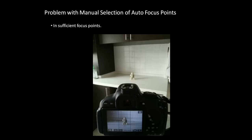The problem with manual selection of autofocus points is the insufficient number of focus points. In this picture, if the subject is right at the center this technique works fine because you have a focus point there. But if the subject is on the extreme left or extreme right, you don't have a focus point there — you only have focus points in a limited area. So in such cases, this technique won't work.